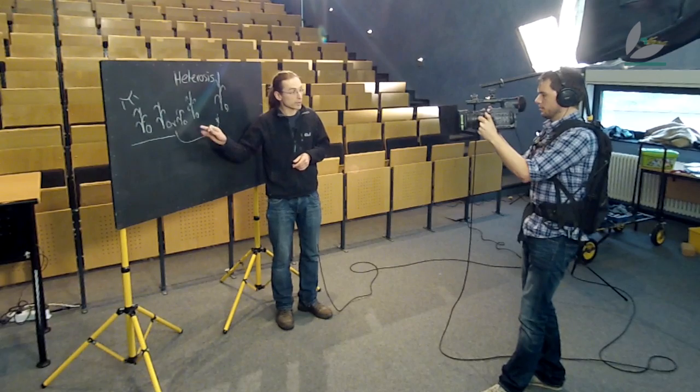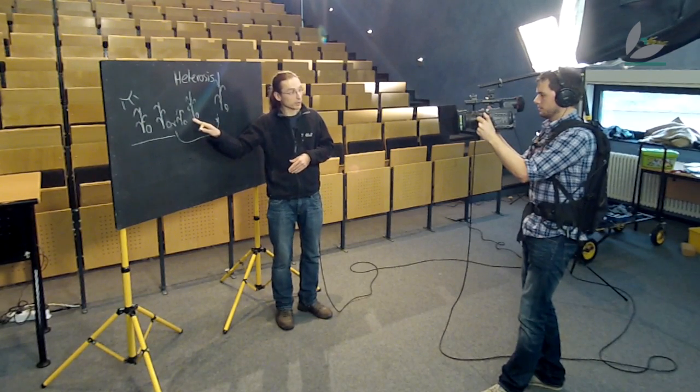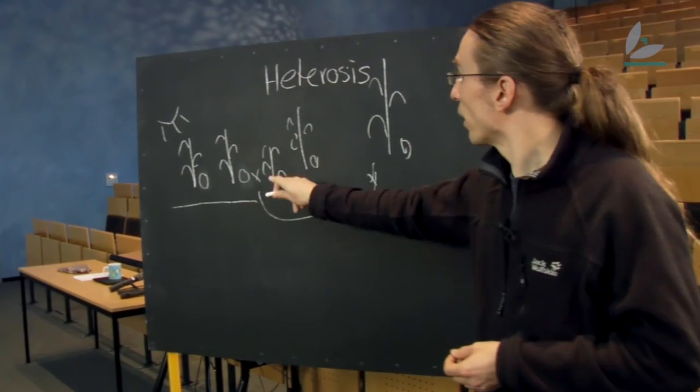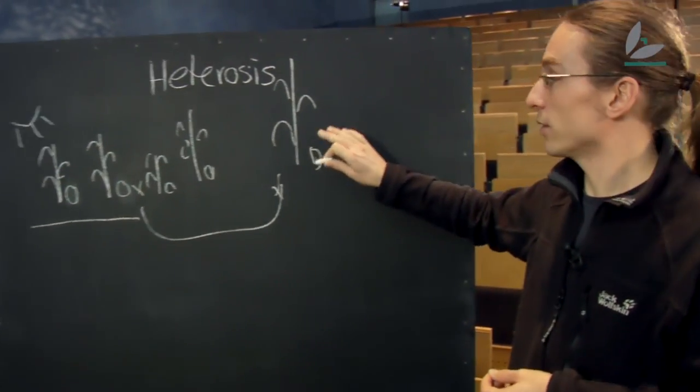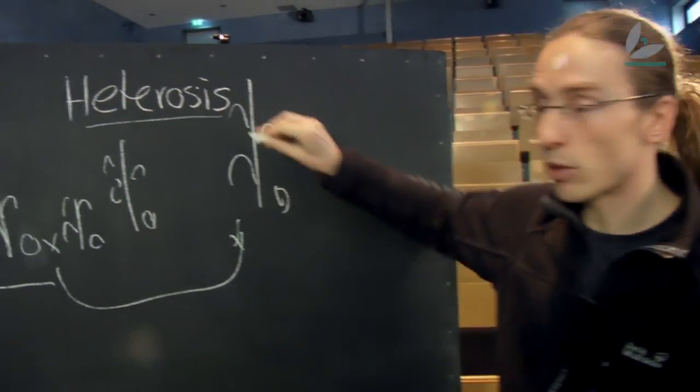Corn lines which are bred are quite pure with respect to their genes. As scientists, we call that homozygous, while these genes mix up in their offspring, which we call heterozygous. Therefore, this effect is termed heterosis.